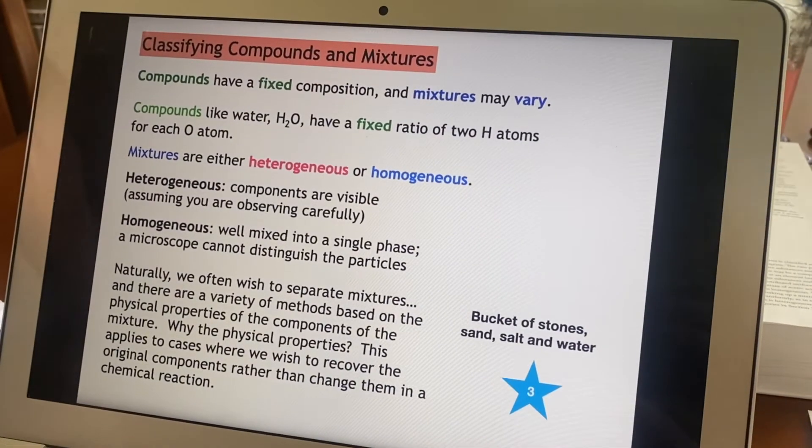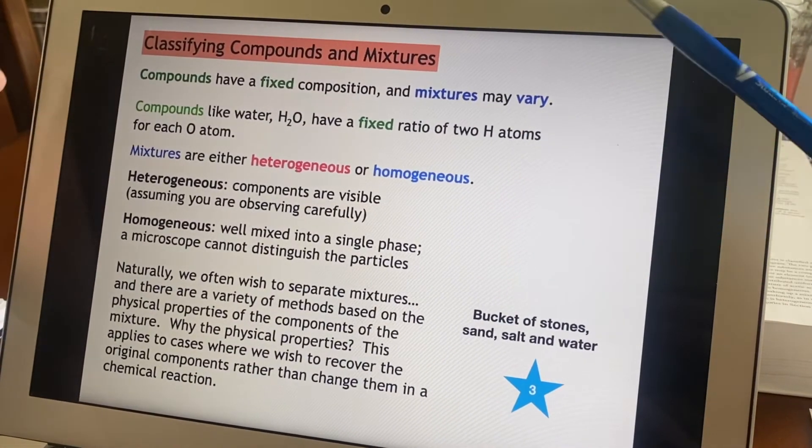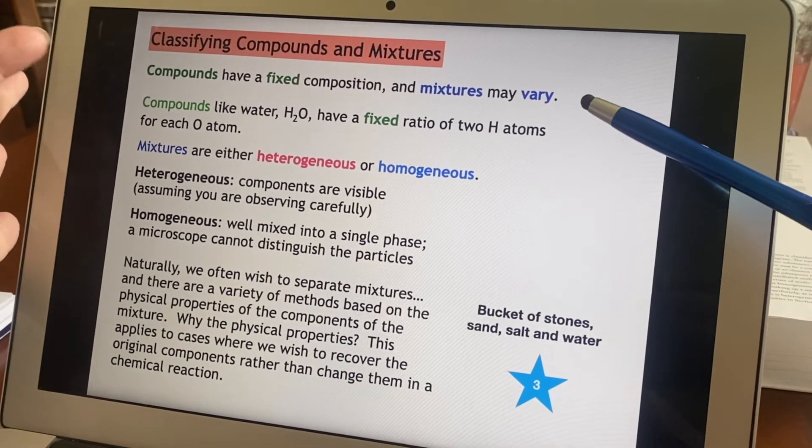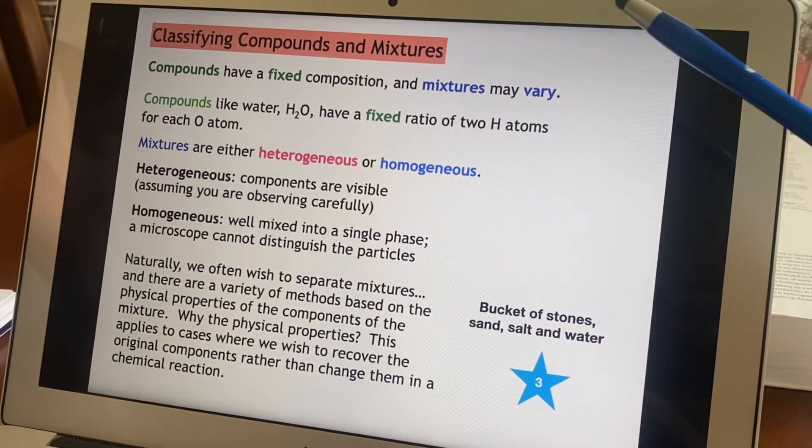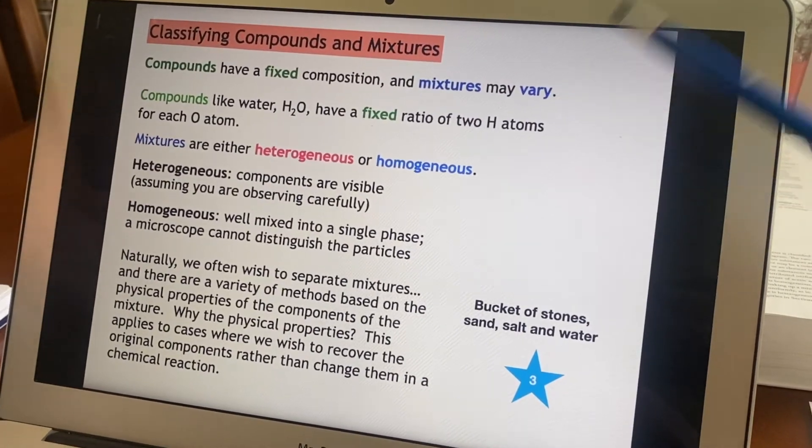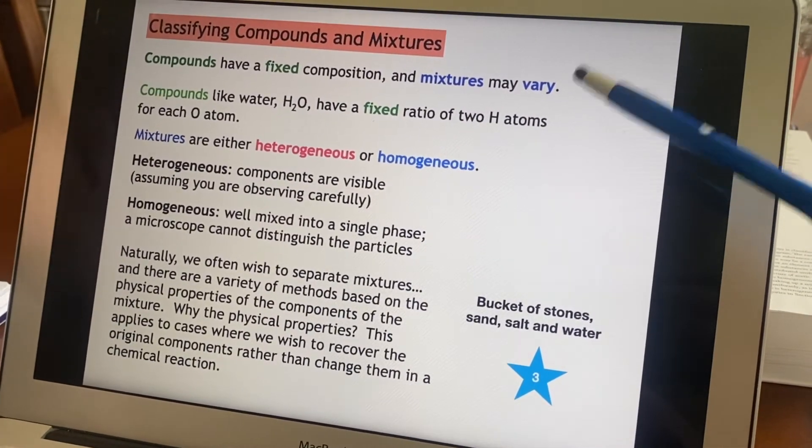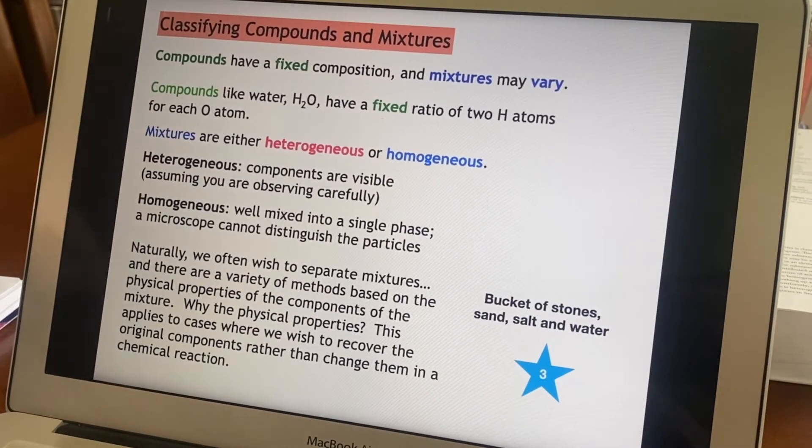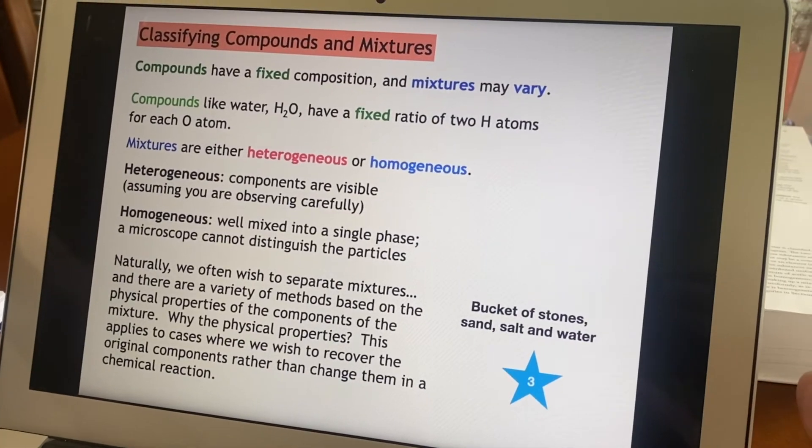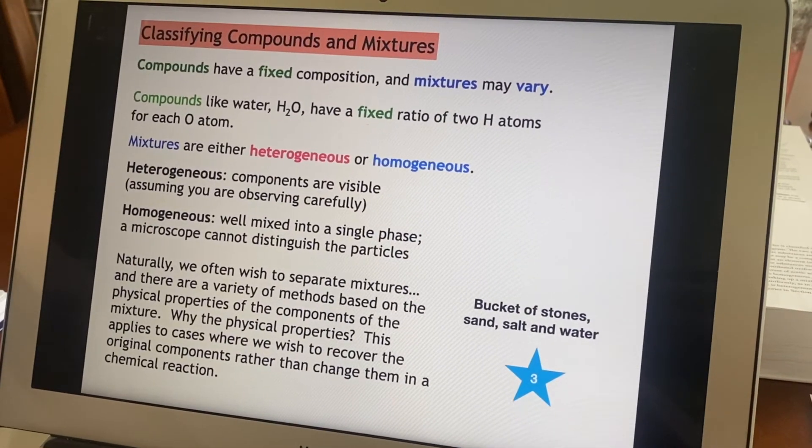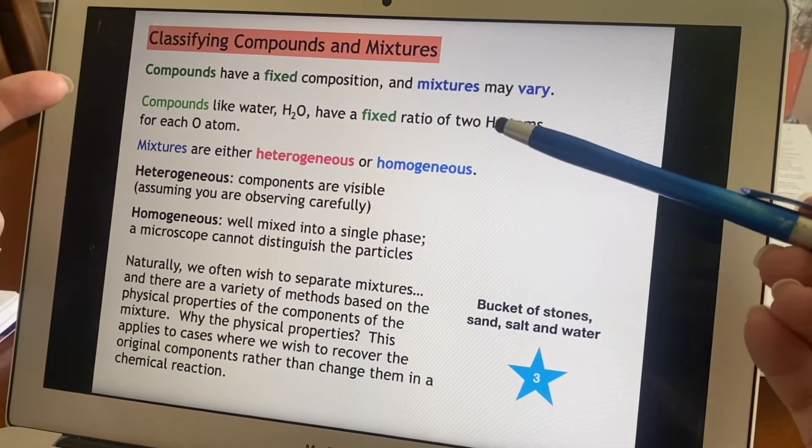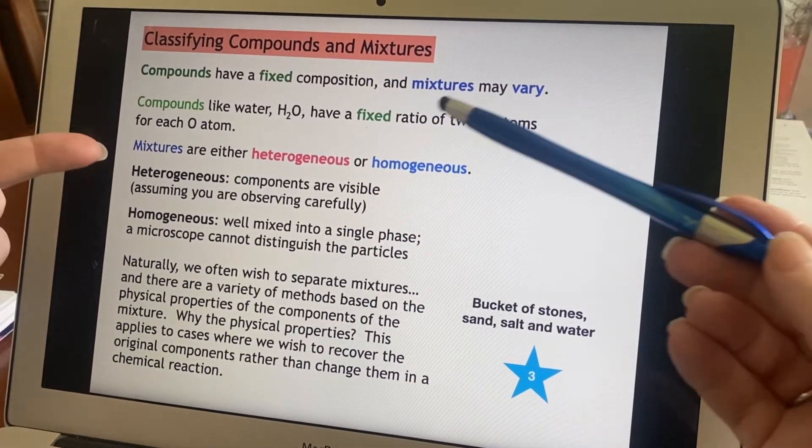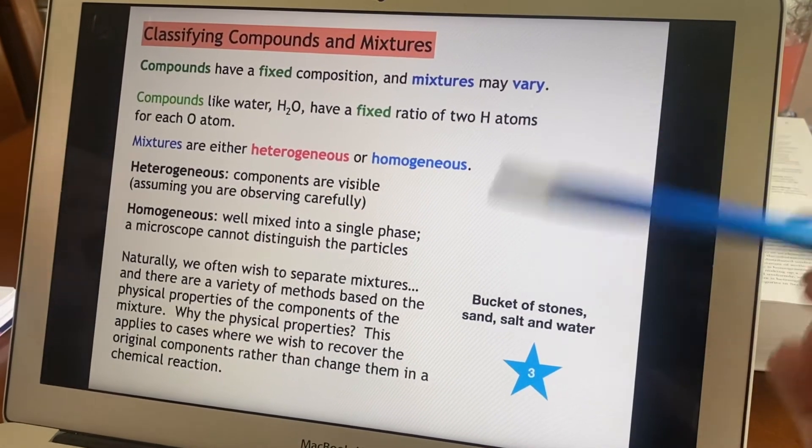So when we get into the little graphic about classifying something as a compound or a mixture and so on and so forth, the important things are that compounds are always the same. This composition is the same all the time. Mixtures, they're going to be different. You can mix sand with salt and you can have a lot of questions. Well, how much sand versus how much salt? Lots of different possibilities. So the compounds, we talked about water, H2O. Two H's for every O. Two hydrogens for every oxygen.